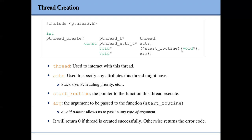Because the thread function accepts an argument when it starts, you need to pass that argument using the fourth argument, which is also a void pointer. Like other functions in the library, pthread_create will return zero if the thread is successfully created; otherwise it returns a non-zero error code representing the cause of the error.